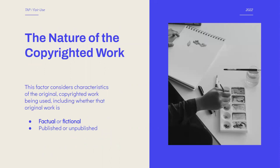The second factor is the nature of the copyrighted work. This factor considers characteristics of the copyrighted work itself that you would be using, including whether the original work is factual or fictional — so whether it is journalistic or creative — and whether the work is published or unpublished. Fair use tends to favor works that have been published and works that are factual. However, each of these factors need to be weighed against each other, and fair use of creative or fictional works is completely possible.